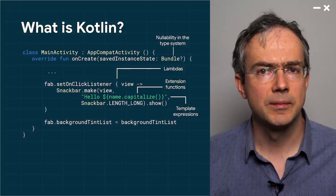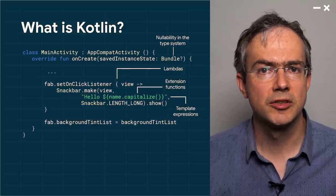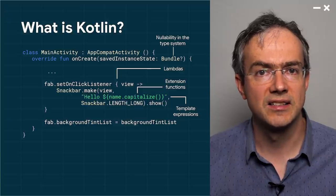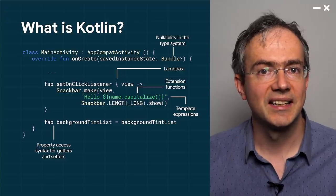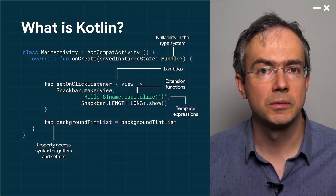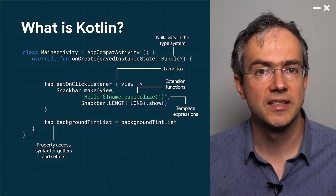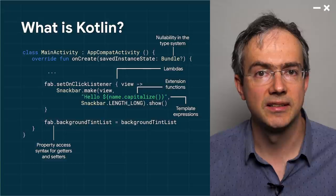In this example, that call is made as part of a template expression, which is a compile-time checked alternative to string.format with an elegant syntax. The last highlight shows using properties to provide a level of abstraction over getters and setters and allow assignment syntax.